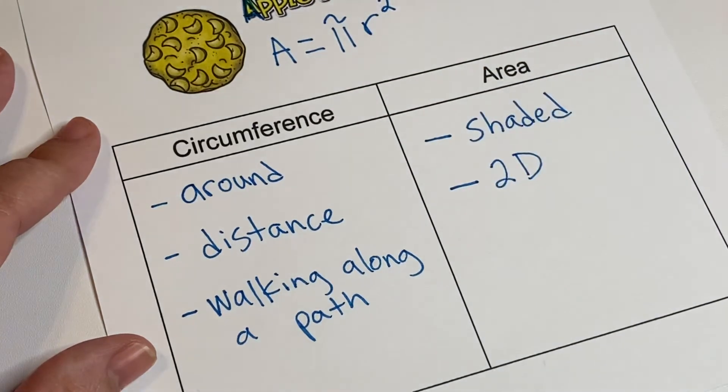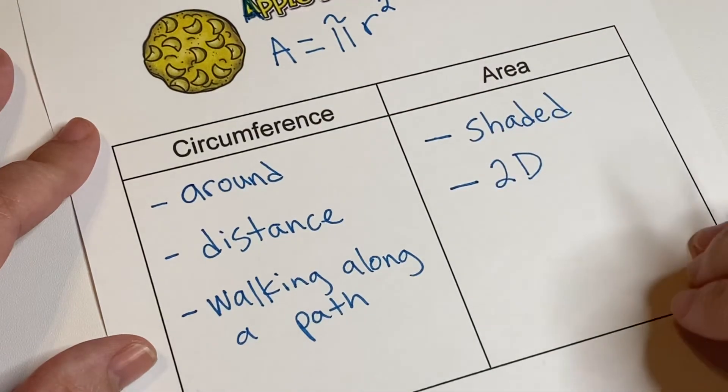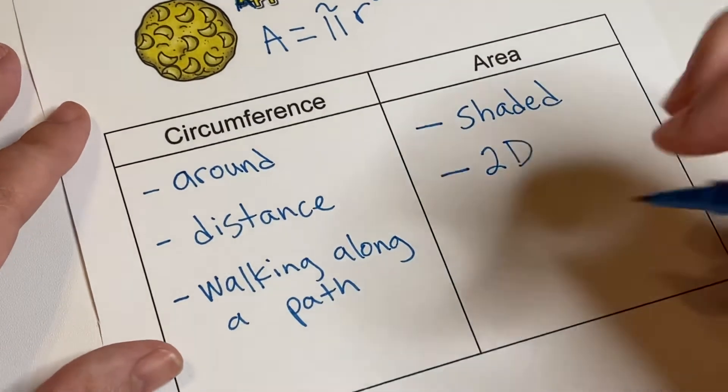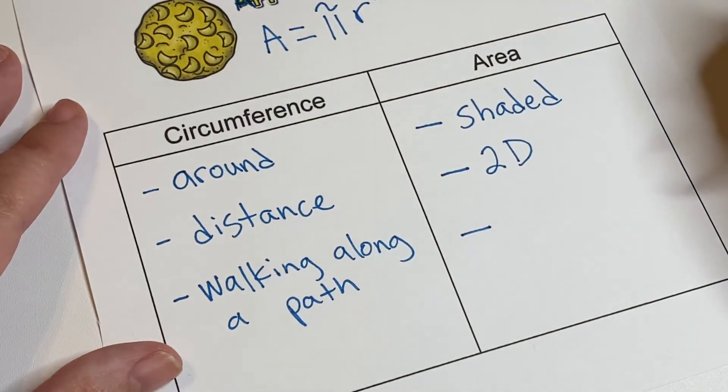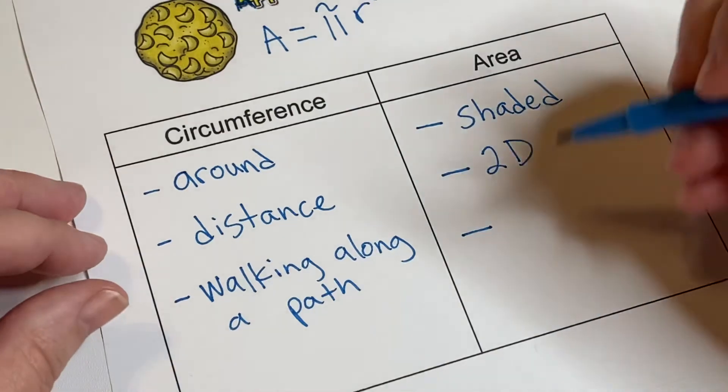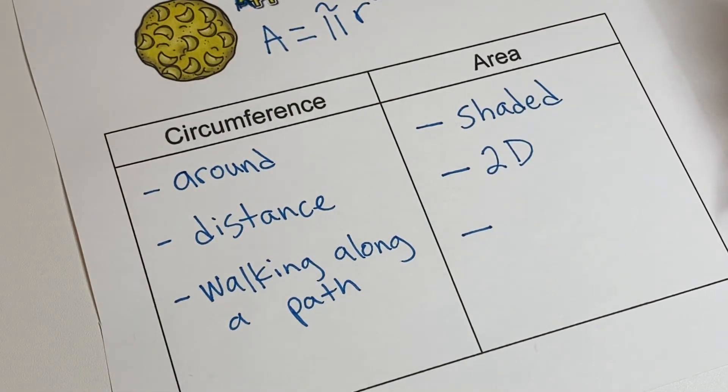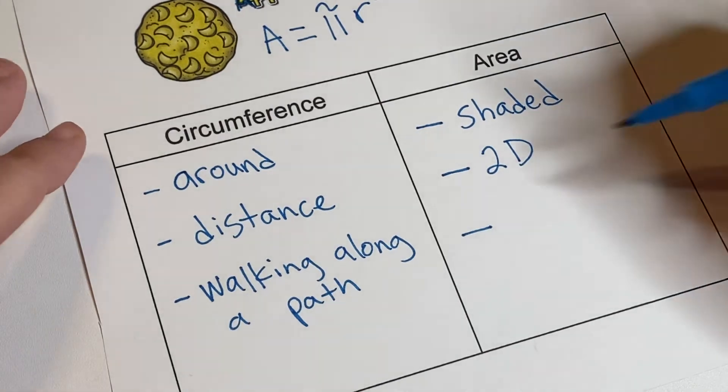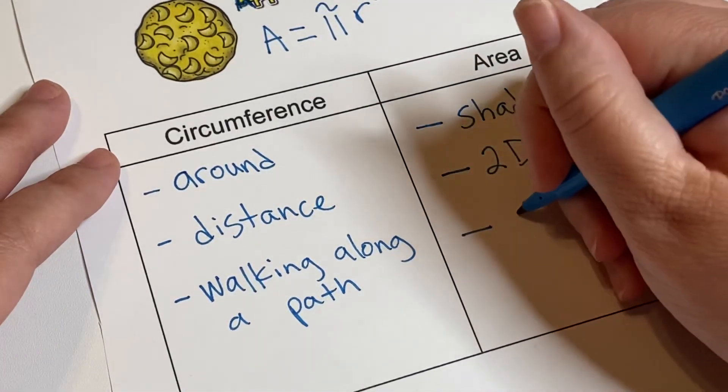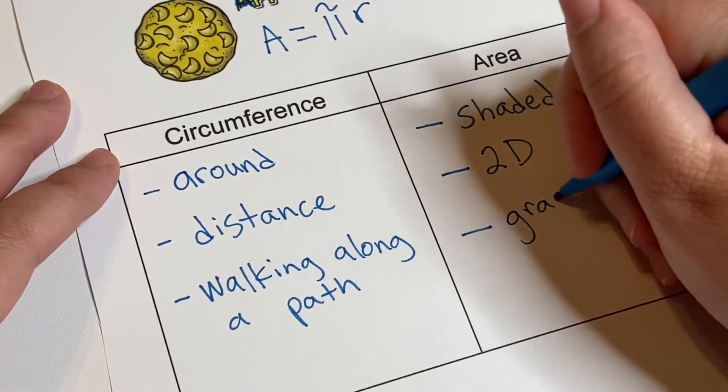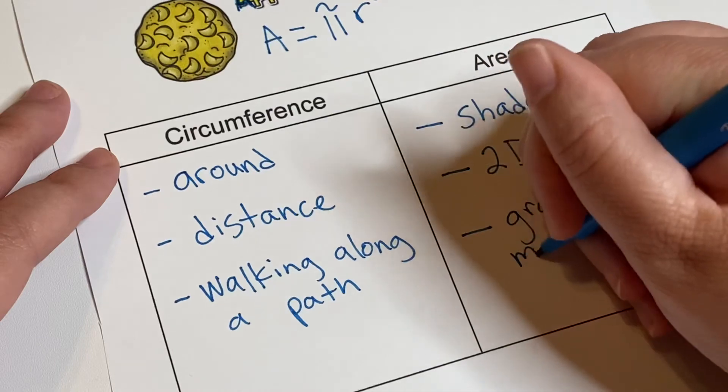So it's shaded, it's filled in, it's that part in the middle. And if you had a walking path, that would be the circumference, and whatever is in the middle would be the area. So that could be like, say there's grass in the middle of the path.